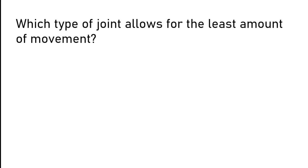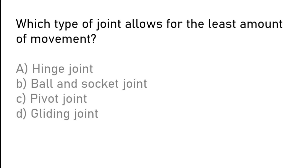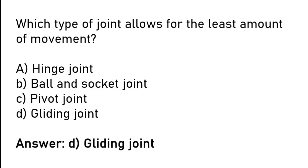Which type of joint allows for the least amount of movement? Hinge joint, ball and socket joint, pivot joint, or gliding joint. The correct answer is option D: gliding joint is a type of joint which allows for the least amount of movement.